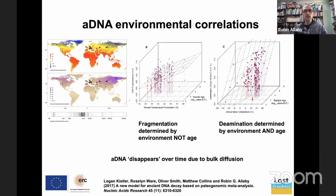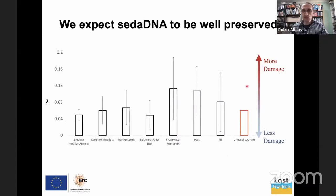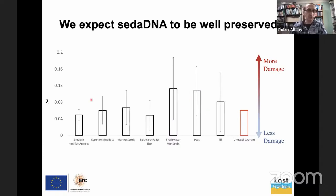We expect to see DNA damage correlate with environment and time. A first glimpse of what we're seeing from the Doggerland data is that this pretty much seems to be the case. In peat — more acidic environments — you get more hydrolysis, so we see more damage and greater lambda values. Whereas in more saline environments, salt slows down the process, and you see less damage. So we've got a nice correlation between environment and the level of DNA damage.